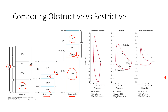Looking at the flow-volume curve, just appreciate the volume changes — the total lung capacity is much smaller in a restrictive pattern. Normal is about five liters or so. In an obstructive defect the total lung volume is even larger than normal. In a restrictive pattern, the lung is just much, much smaller.